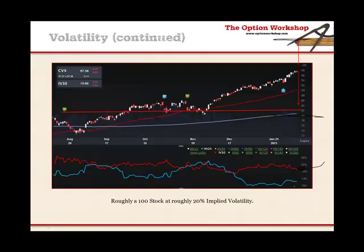Historical volatility — this blue line here is historic volatility, and it measures the amount the stock has actually moved over a 20-day period. And the red line here is the implied volatility, and it measures how much the options market is anticipating the stock should move during the life of the option.